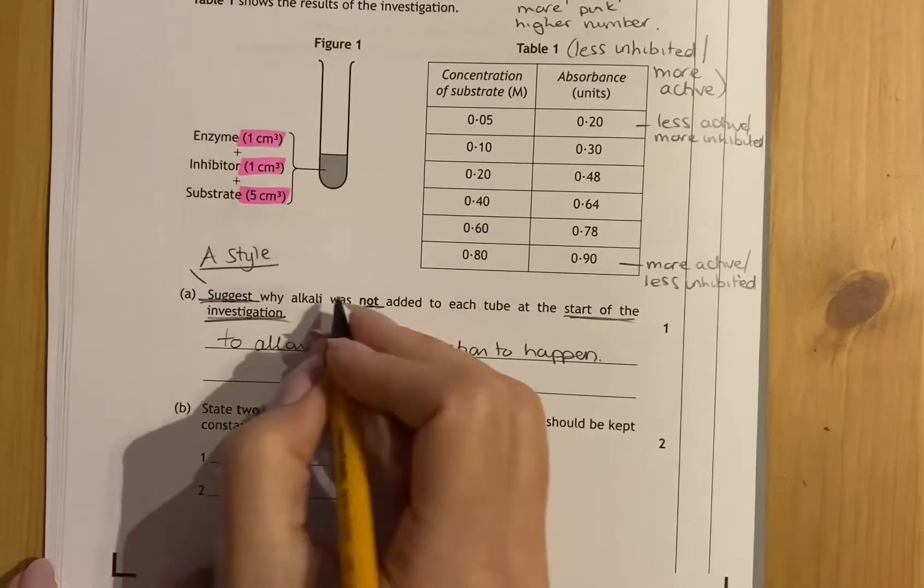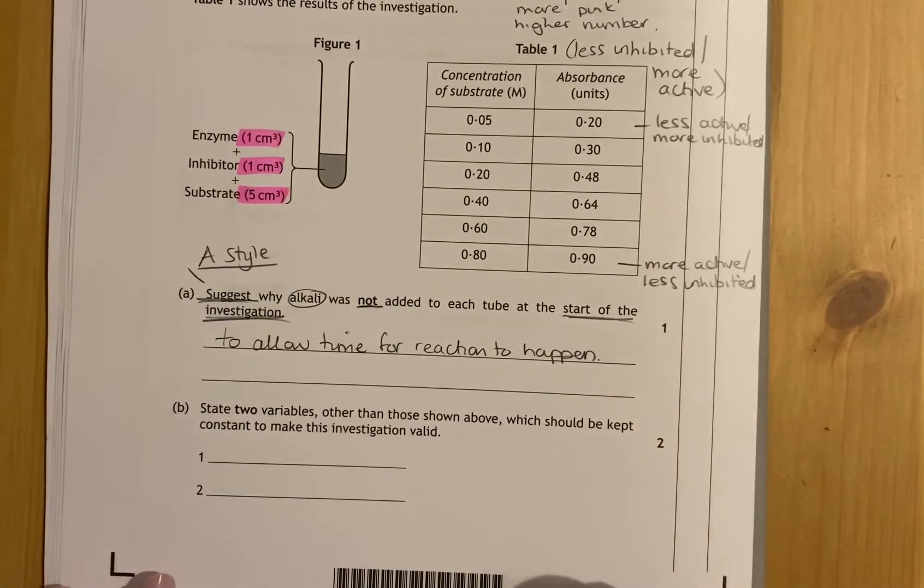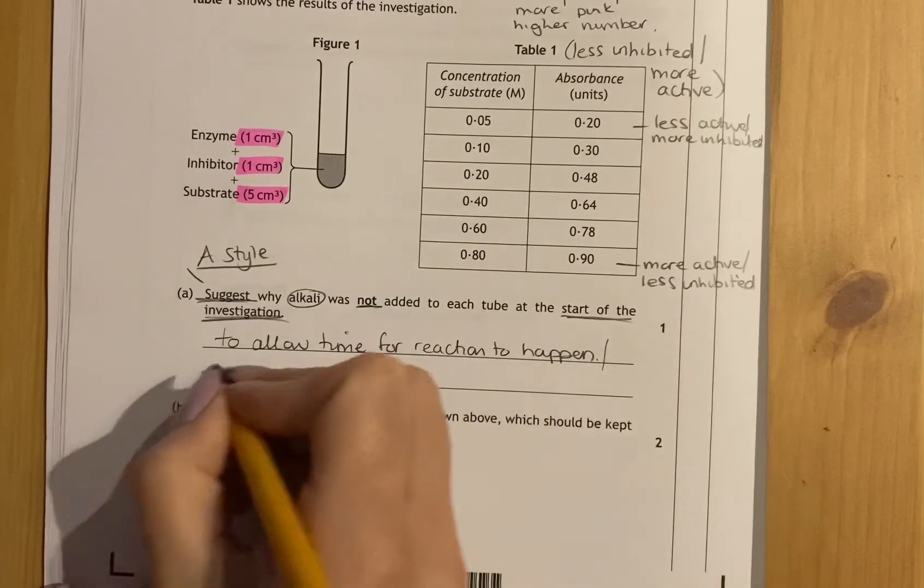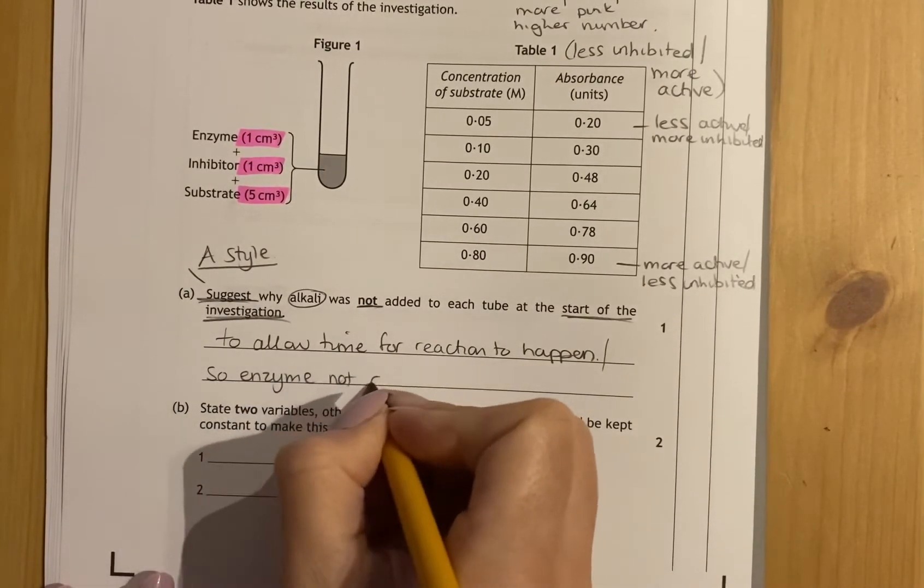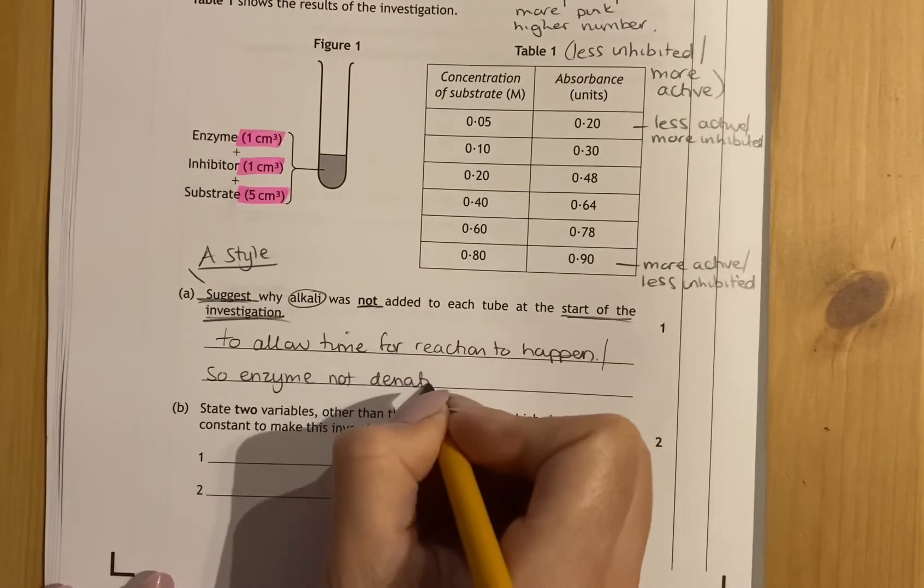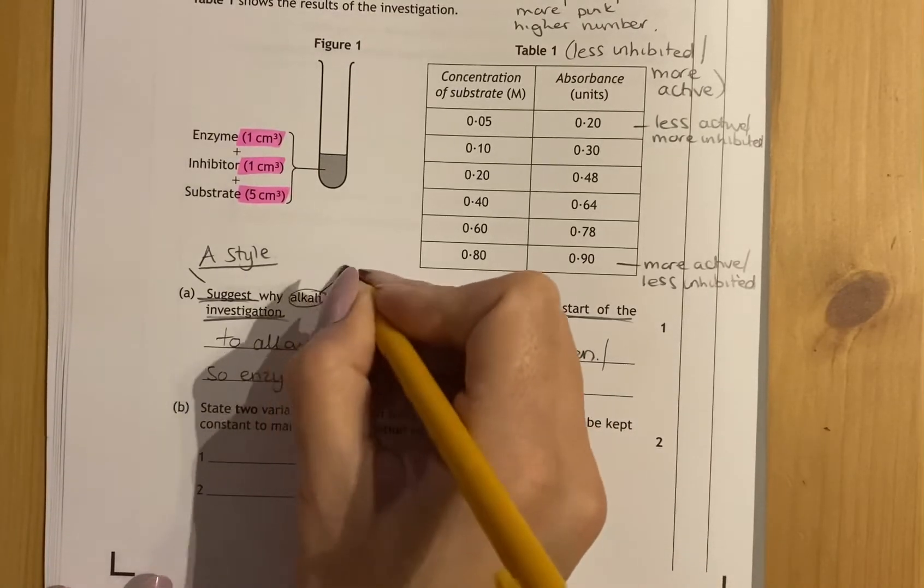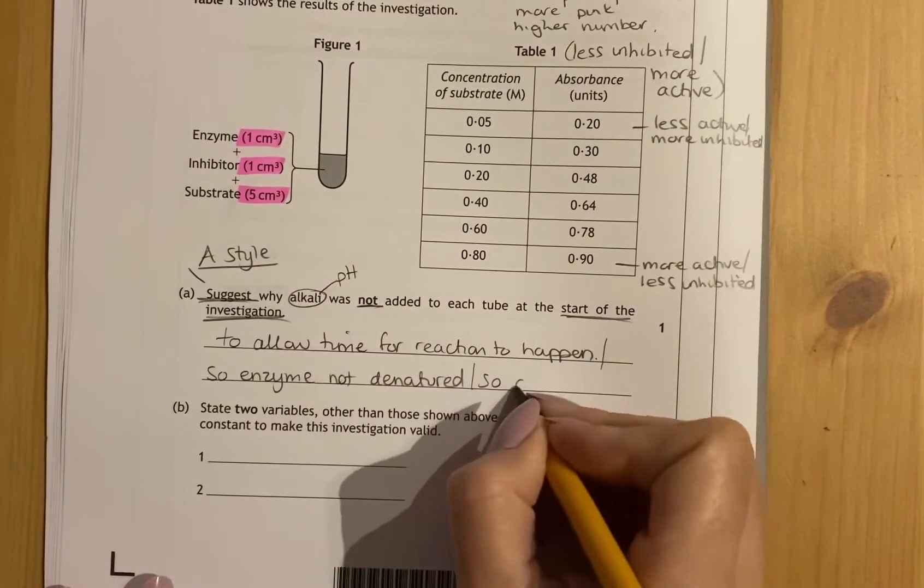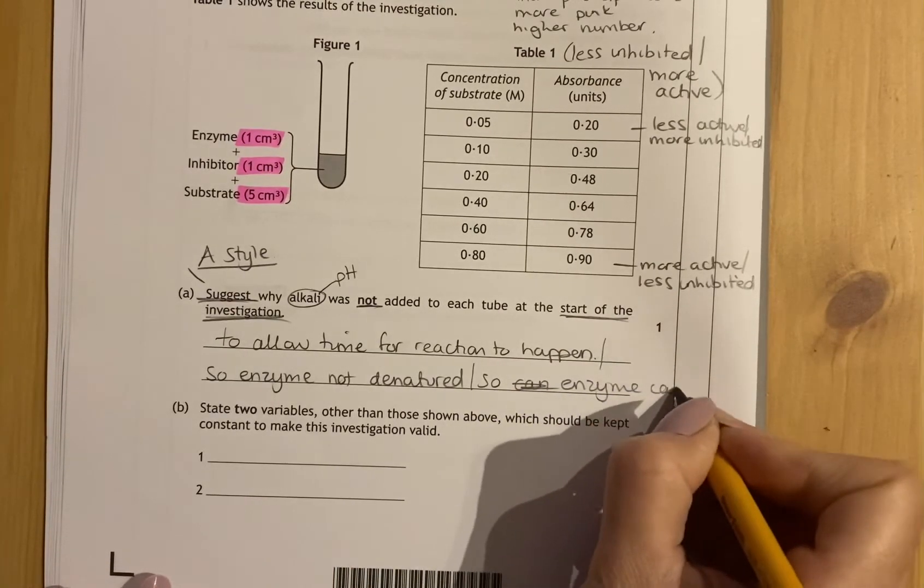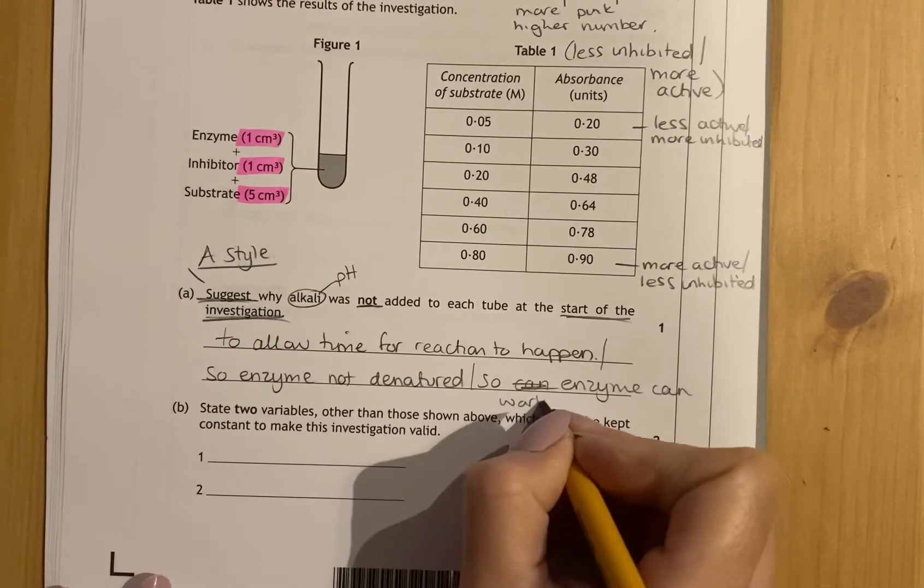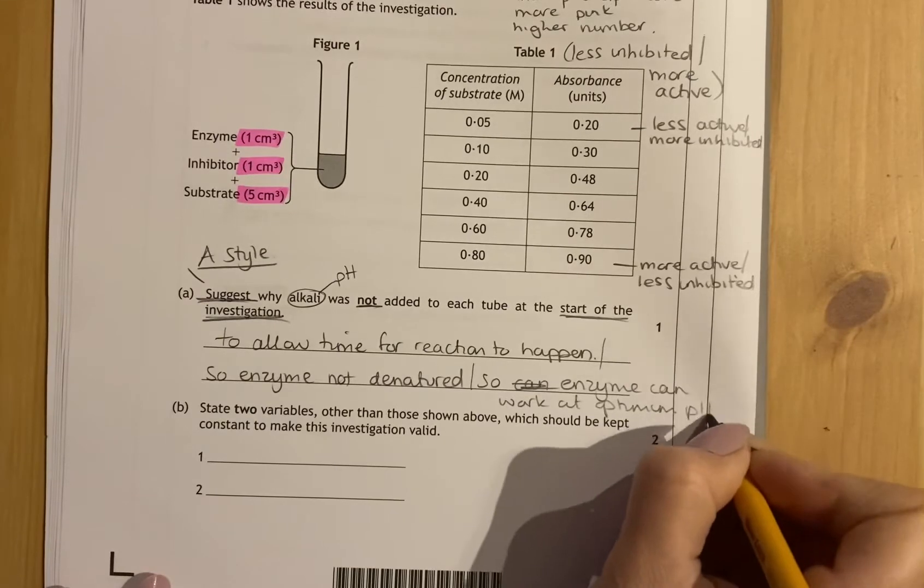Now also, you might know that alkali, if it's an extreme alkali, an extreme of pH, it might denature the enzyme. So you could also say so the enzyme is not denatured, or you can say so that the enzyme can work at the optimum pH. There's quite a number of answers for this because it's quite a broad question.